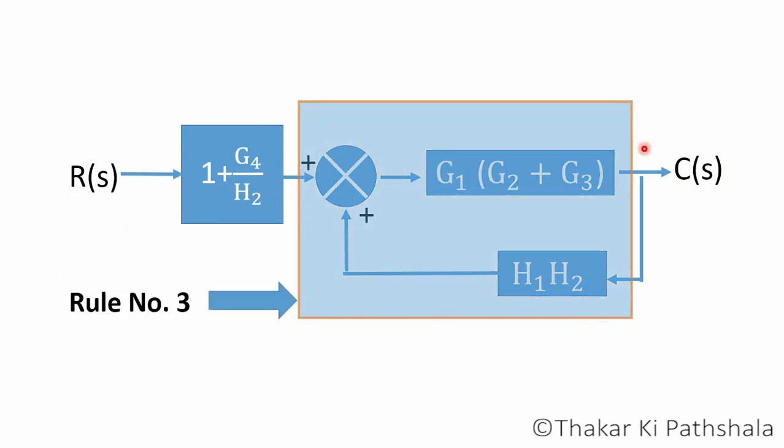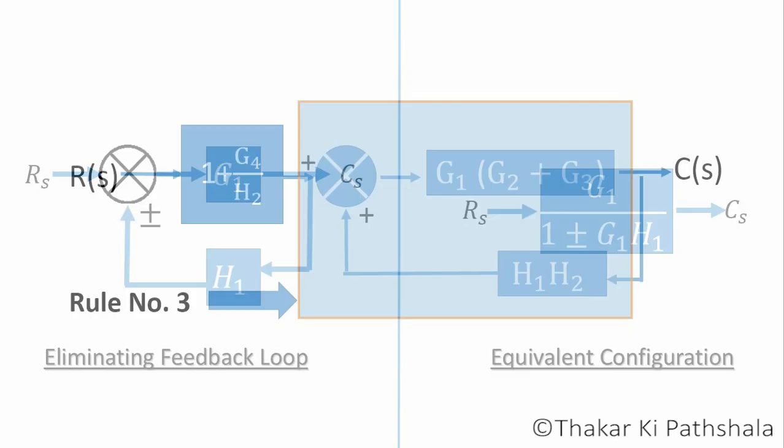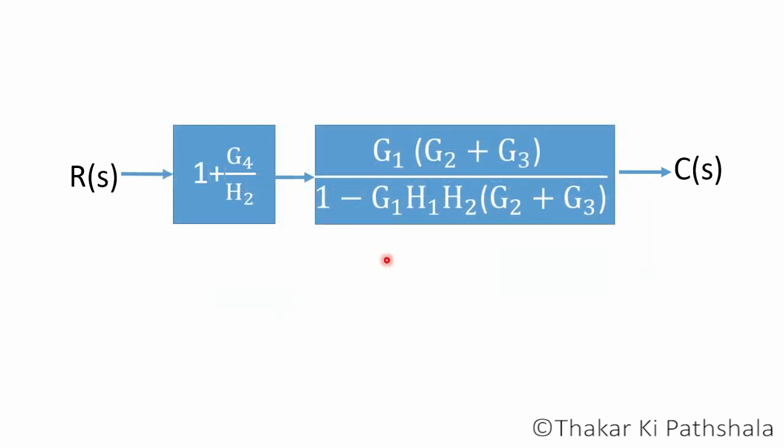That is for eliminating feedback loop, according to which we can reduce as gain of block divided by one plus or minus multiplication of block and feedback block. Let's apply rule number three here. It will be reduced as this. Finally we have arrived to this last step for which we will reduce these two blocks.